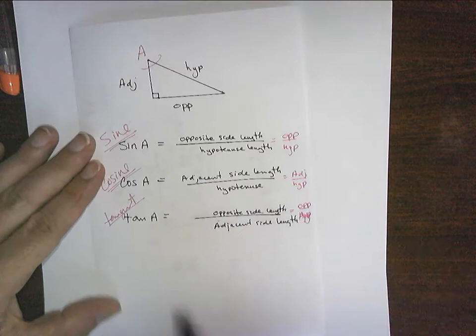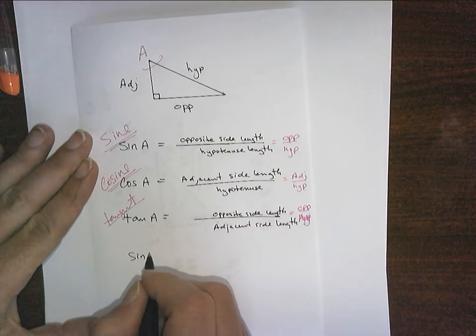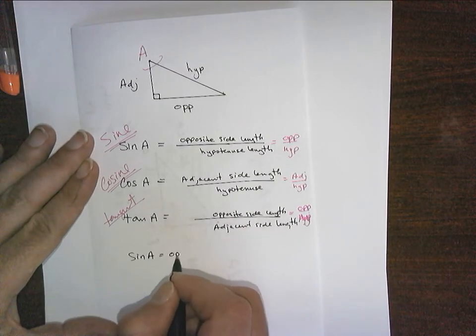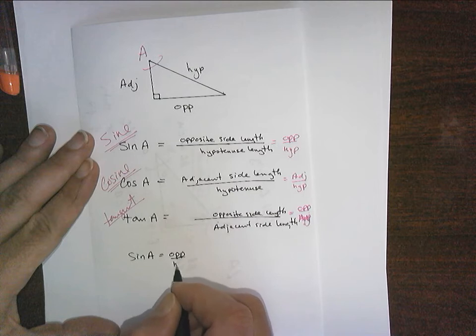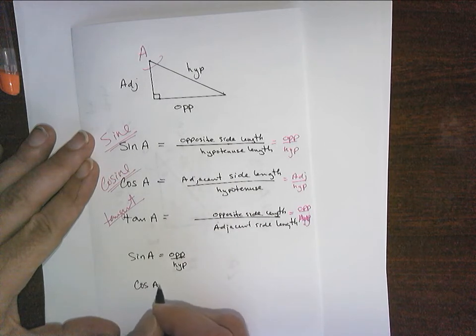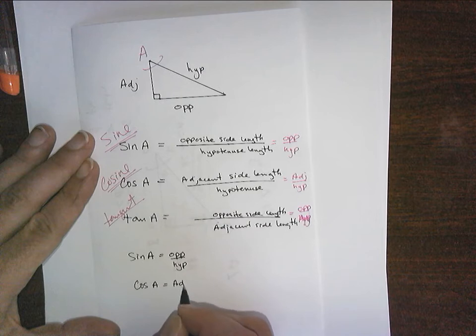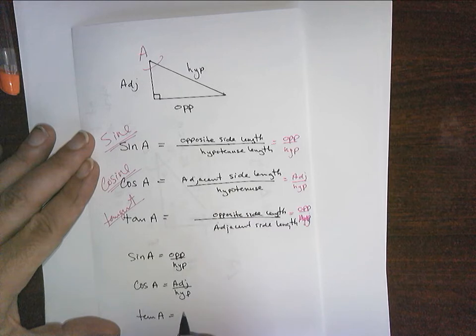So let me do that nicer. So it's going to be sine of A equals opposite over hypotenuse, cosine of A equals adjacent over hypotenuse, and tangent of A equals opposite over adjacent.